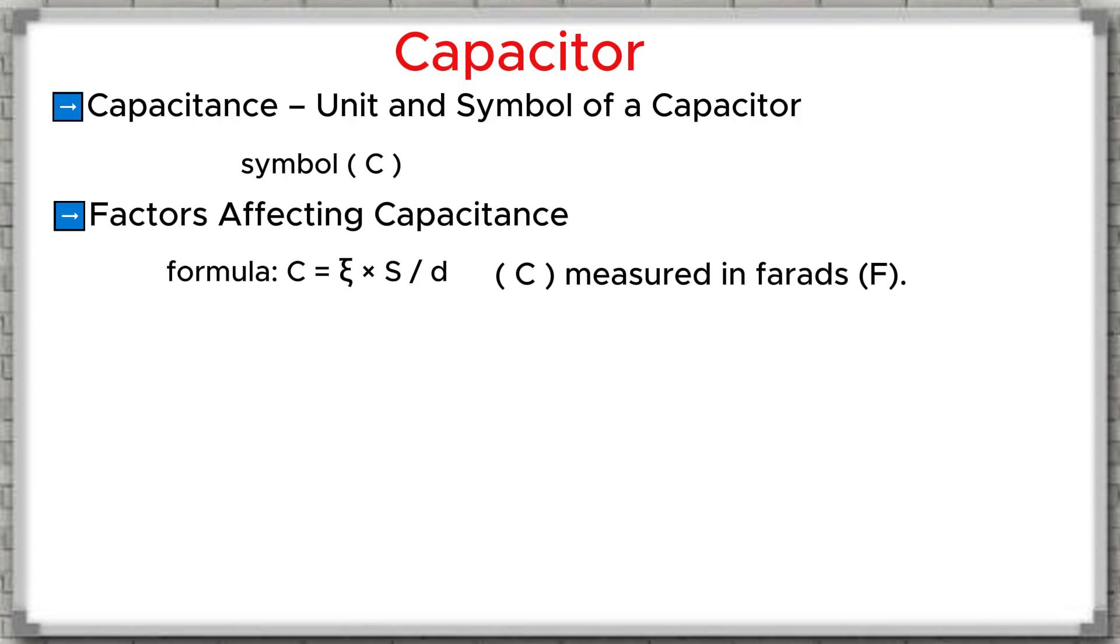Factors affecting capacitance: The capacitance value of a capacitor is determined by the formula C = ε × S / d, where C is measured in farads. Increase plate area, the higher the capacitance. D, distance between the two plates - the smaller the distance, the higher the capacitance. Use a dielectric material with a higher dielectric constant, ε - capacitance increases.